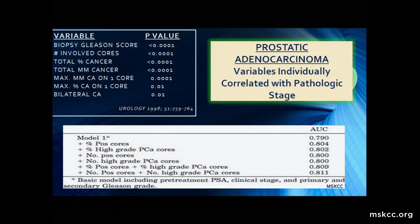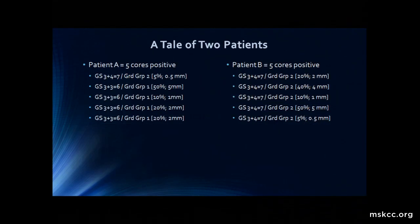What's important about all of these things is that from very early on, we know that adding any measure of tumor quantitation to base predictive models — whether nomograms, CAPRA, NCCN, or D'Amico — adds information. Yet at some point, we seem to have stopped including them within prediction.